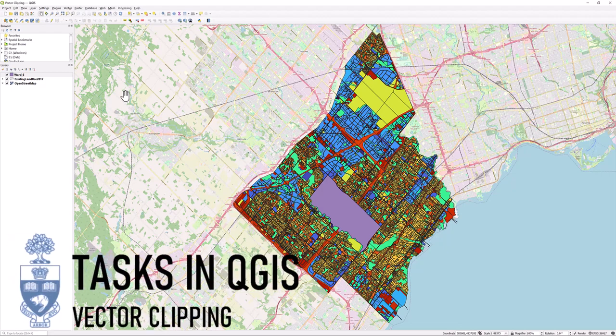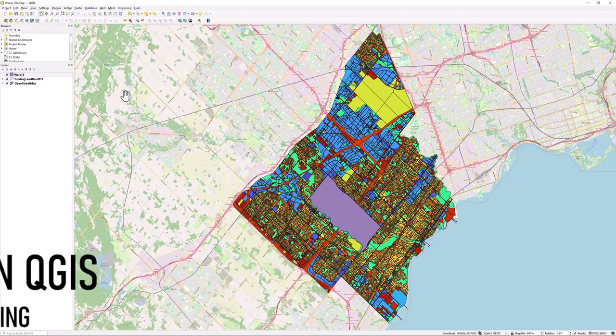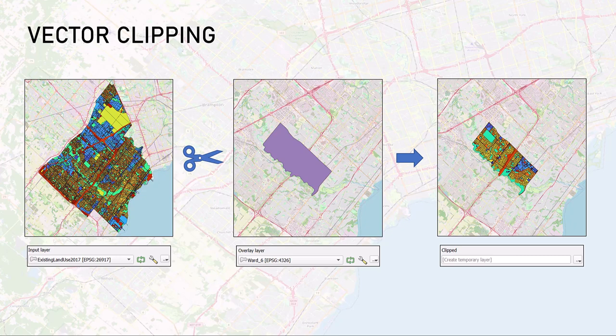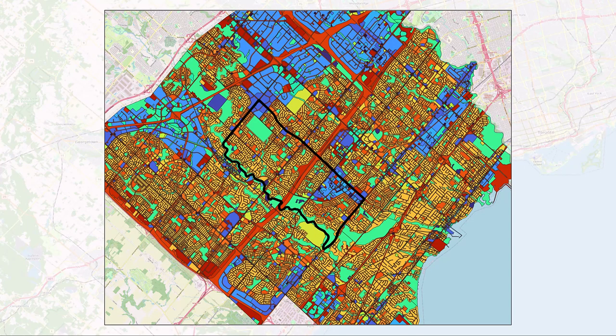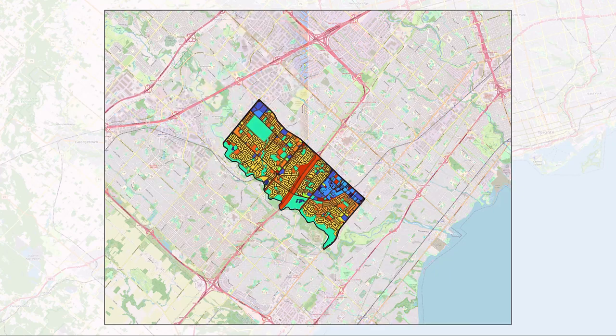This tutorial covers vector clipping in QGIS. The Clip Tool works by cutting a piece of one dataset by one or more features from another dataset. It can be thought of as a cookie cutter. Perhaps we have a specific area of interest — our goal is to take a larger dataset and clip it so only the data that falls within our area of interest remains.